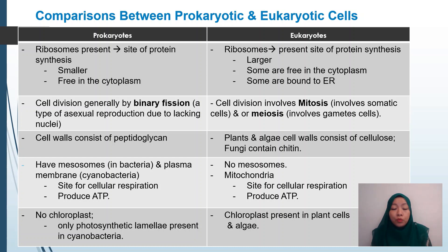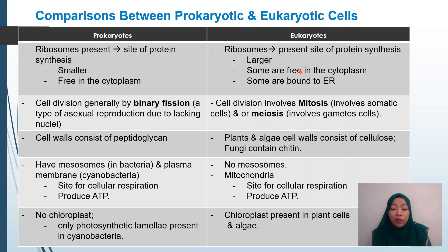Now let's move on to the comparison between prokaryotic and eukaryotic cells. When comparing, we look at both similarities and differences. Ribosomes are present in both prokaryotes and eukaryotes; however, their characteristics differ. In prokaryotes, ribosomes are smaller and freely move in the cytoplasm. In eukaryotes, ribosomes are slightly larger — some are freely moving in the cytoplasm, but some are bound to the endoplasmic reticulum.